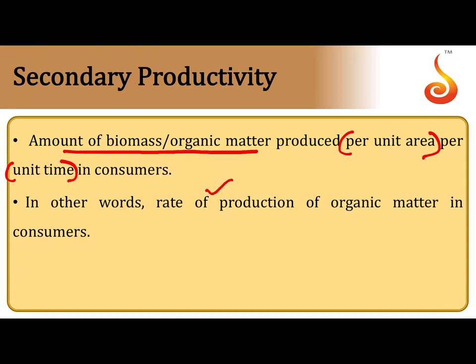Secondary productivity is the rate of production of organic matter by consumers. When you eat a plant, not all of its stored organic matter is converted to your body mass — some is used for digestion, excretion, and other life processes. Only the fraction stored as body mass or fat per unit area per unit time of consumers is referred to as secondary productivity.